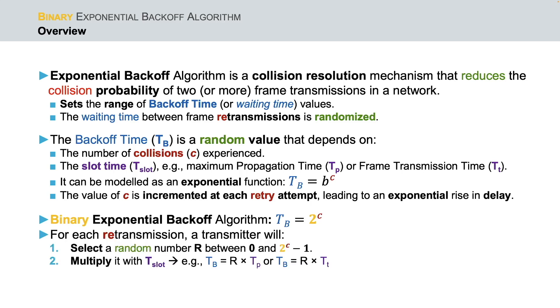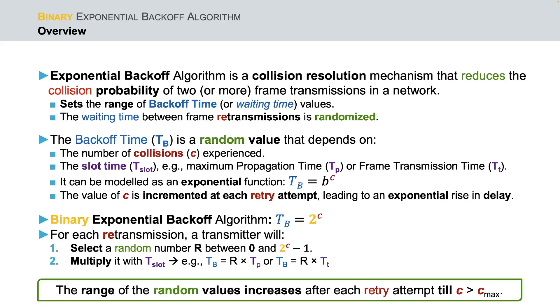In binary exponential back-off algorithm, the transmitting node for each retransmission will select a random number r between 0 and 2^c-1 and will multiply it with t-slot, which in turn is computed, for example, based on maximum propagation time or frame transmission time. Note that the range of the random values increases after each unsuccessful transmission attempt till c is larger than predefined c max.